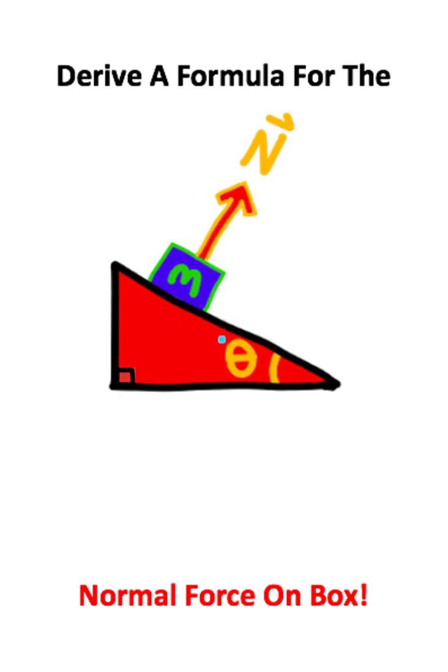Now the way that I can find this formula is by first recognizing that this box is going to have a downward weight force. This downward weight force is going to be the mass of the box multiplied by the gravitational acceleration of whatever planet we're on.